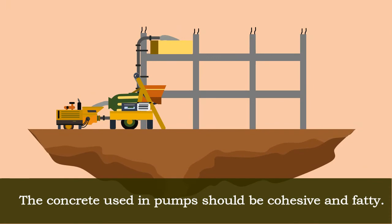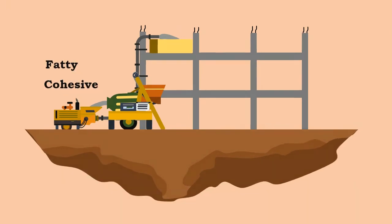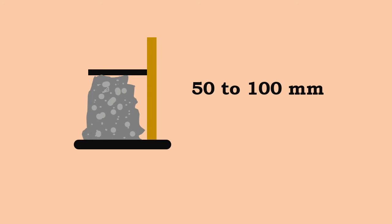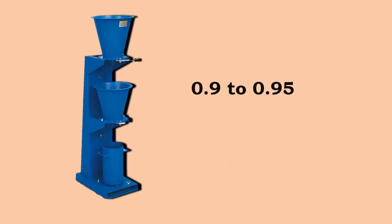The concrete used in pumps should be cohesive and fatty. The slump value of these concretes should range from 50 to 100 millimeters or even more, and a compacting factor of 0.9 to 0.95.